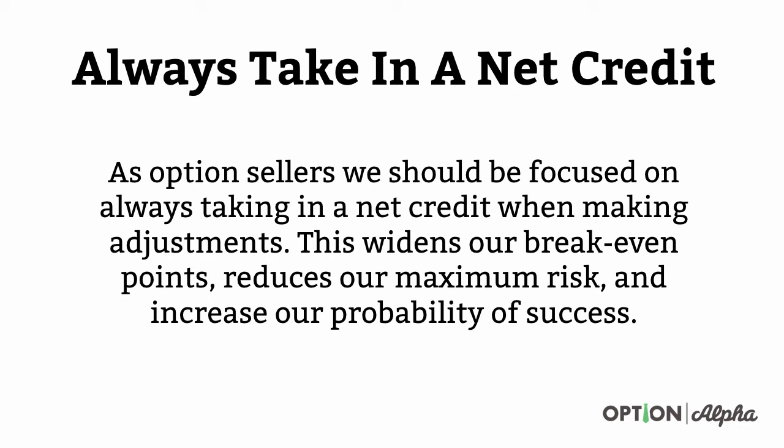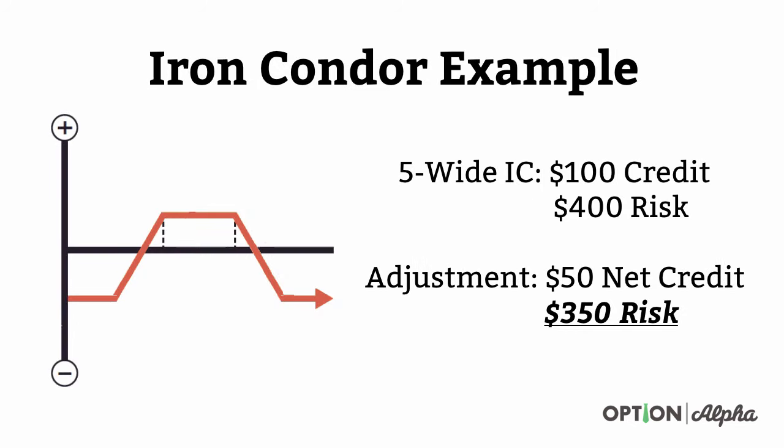The fourth thing is always take in a net credit. As option sellers, we should always be focused on taking in a net credit when making adjustments. This widens our breakeven points, reduces our maximum risk in the trade, and increases our potential chance of success. If we widen our breakeven points after the trade has moved against us, we have a better chance that the stock could land inside a profitable zone. There is no case where you should be paying to make an adjustment as an option seller.